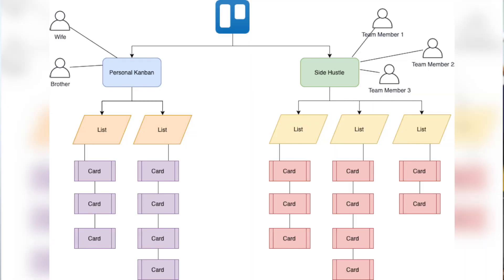For our example, we're just going to leave it on private. In a private board, only people you invite can see and edit the board. My wife and brother can't see or access the side hustle board, and the team members can't see or access my personal Kanban. Right, that's all the theory you need to know. Let's start Kanban-ing.